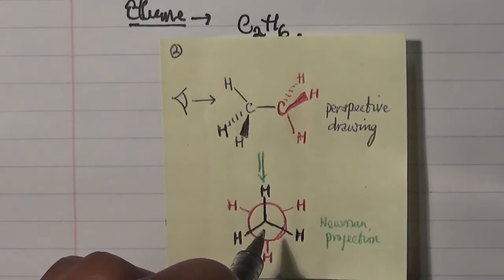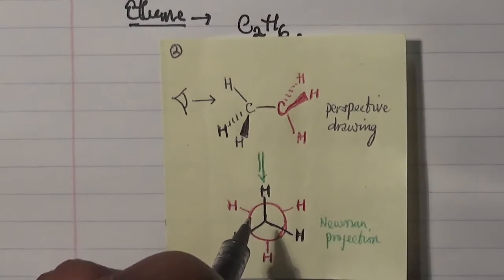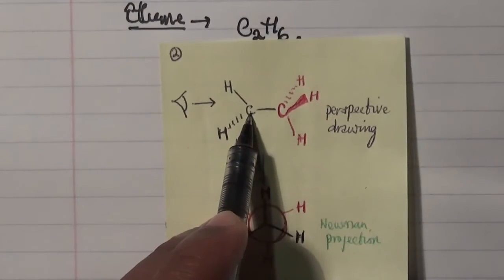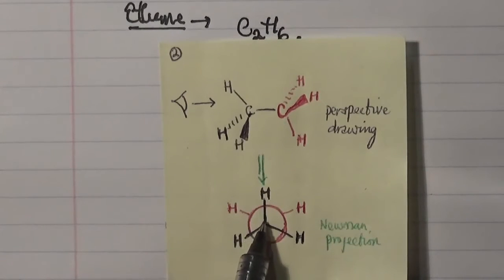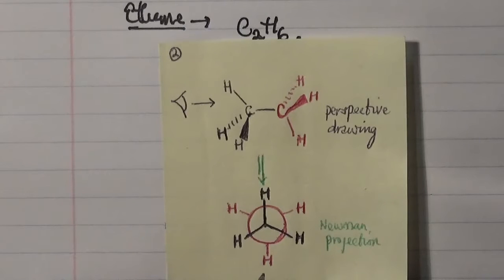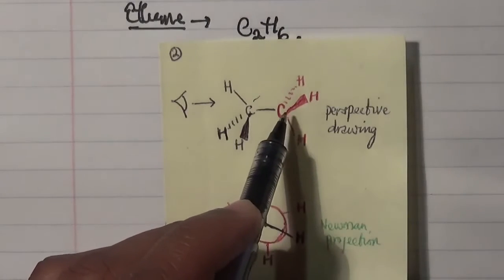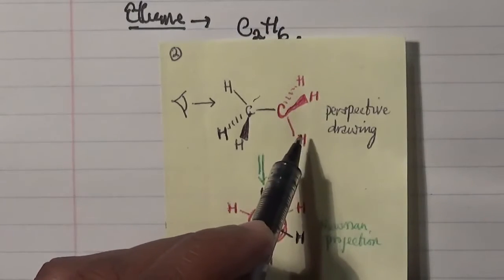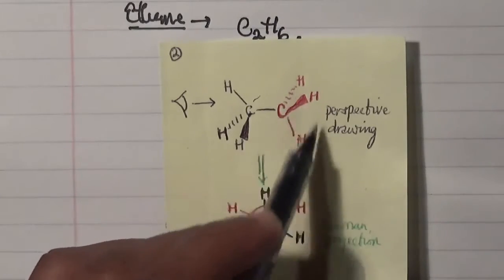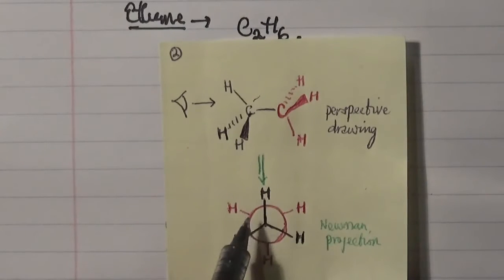So what do we have in here? We have a situation where there is the front carbon, which is this carbon here, and this front carbon is represented as three lines in a Y shape. So you have the carbon position here and three hydrogen atoms pointing out in the form of an inverted Y shape. And what happened to the other carbon here? The other carbon with its hydrogens in red color is revealed by the circle over here.